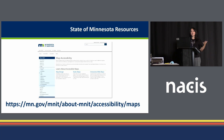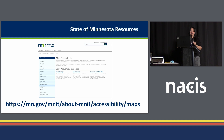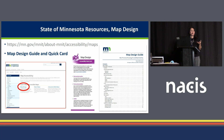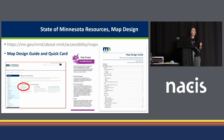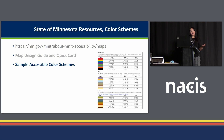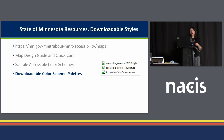Some favorite resources: the state of Minnesota was told to make everything accessible, and since none of us knew exactly what that meant, we've done a ton of research and assembled a large group representing different agencies. We have great resources on our accessibility website, including a map design guide and quick tips card. We also have information about static maps, making PDFs more accessible, interactive mapping tools, sample accessible color schemes, and downloadable color scheme palettes available for both ESRI and Adobe products.